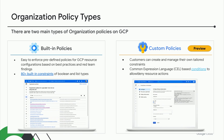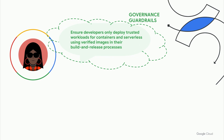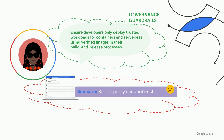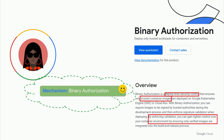Now let's get back to the use case Taylor is considering. In order to ensure trusted workloads are deployed, developers must only use verified images in their deployment processes. Unfortunately, there is no built-in GCP policy that Taylor can readily apply here. Looking through GCP and GKE documentation, there is a mechanism called binary authorization that can ensure only trusted container images are deployed on GKE or Cloud Run. Custom org policy can help bring this guardrail to life.